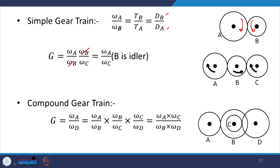In a compound gear train, gear A drives gear B, and gear C on the same shaft as B drives gear D. The gear ratio G = ωA/ωD = (ωA/ωB) × (ωB/ωC) × (ωC/ωD). Since B and C are on the same shaft, ωB/ωC cancels, giving G = (ωA/ωB) × (ωC/ωD) — the product of angular velocities of the drivers (A and C) divided by the product of angular velocities of the driven (B and D).